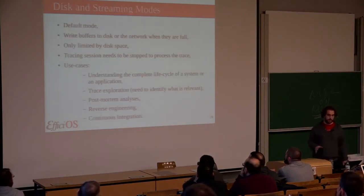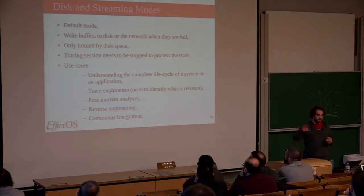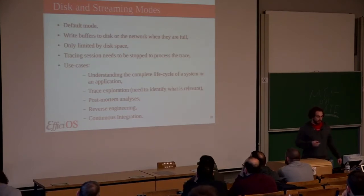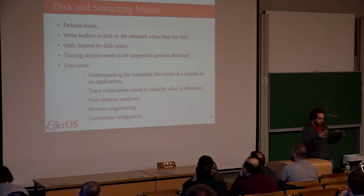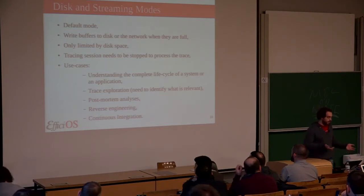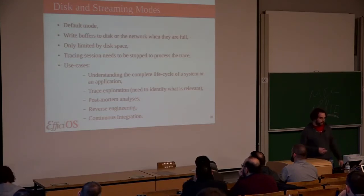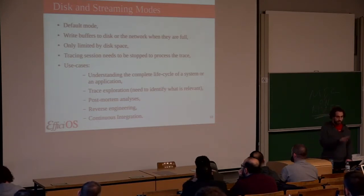The first mode is the default: just extract the trace buffers and write them to disk or over the network. You can have an LTTng relay that waits for data packets to come, so if you don't have space on your local system you can send the trace remotely. You are only limited by disk space and your willingness to process the traces. The main use case is when you want as much information as possible and you don't know what you are looking for. You can also use this in continuous integration systems, where you record the trace while tests are running and then post-process if something goes wrong.